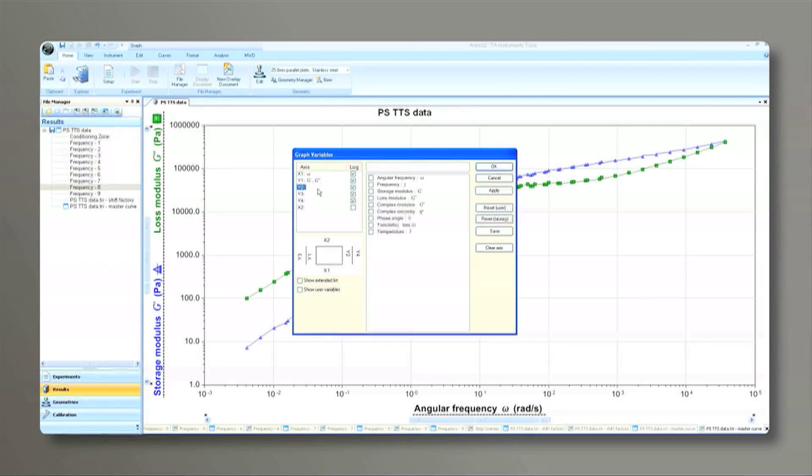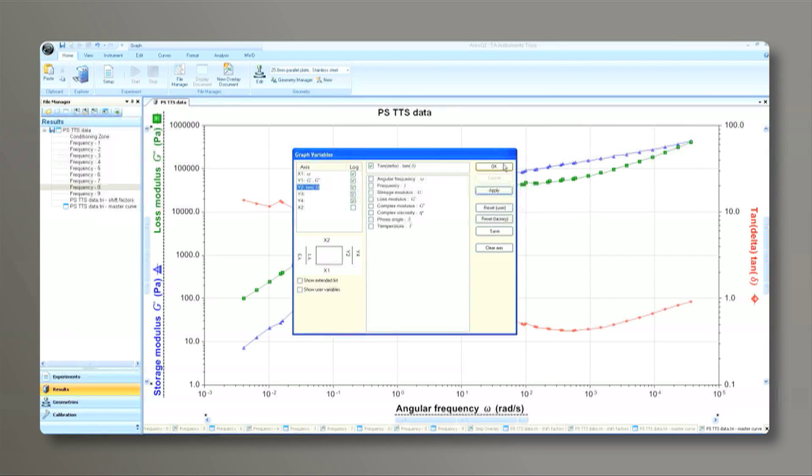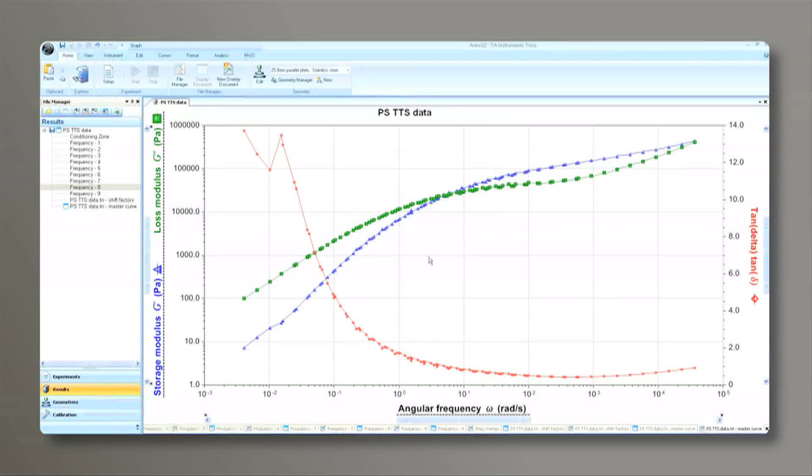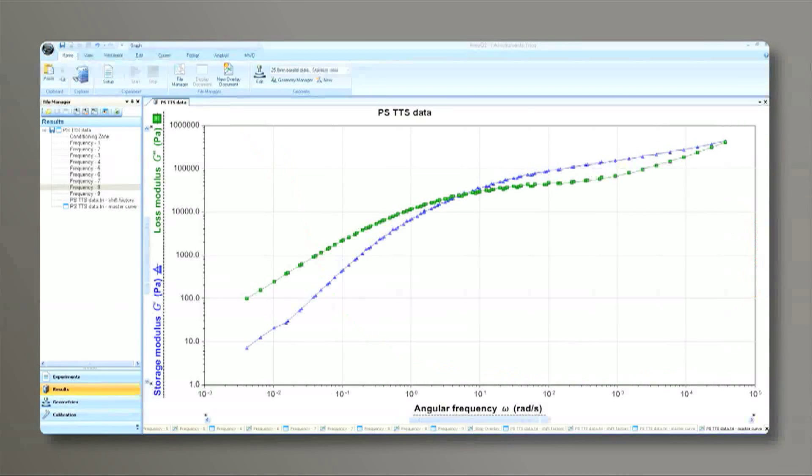Typical tests for this configuration are strain sweeps to determine the linear viscoelastic region, time sweeps to measure stability or time to cure, and temperature ramps or sweeps to determine thermal transitions, measure modulus, and collect TTS data for master curve generation.